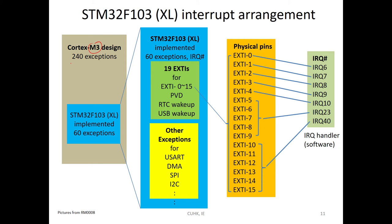M3 has 240 exceptions, but this model F32F103 only implements 60. It includes some external interrupts and other remaining interrupts for communication. In these 19 external interrupts, 16 is for physical pins. From physical pins 1 to 15, some external interrupts have individual IRQ and some share one IRQ. 5 to 9 and 10 to 15 share IRQ.